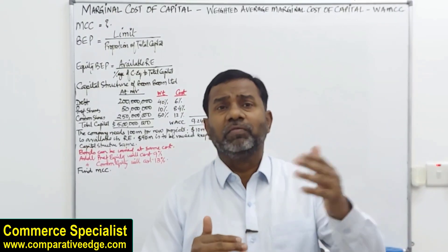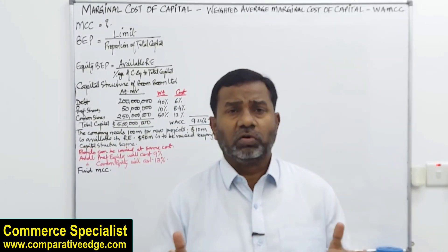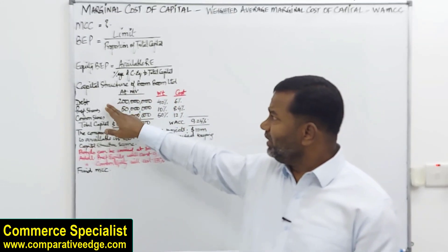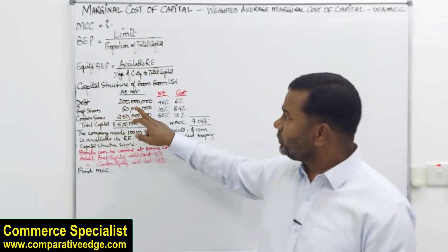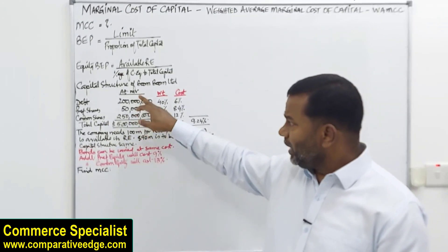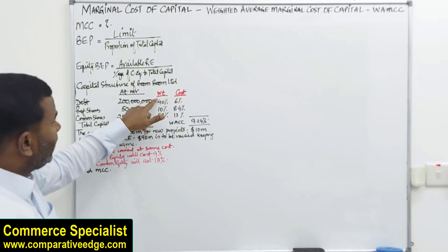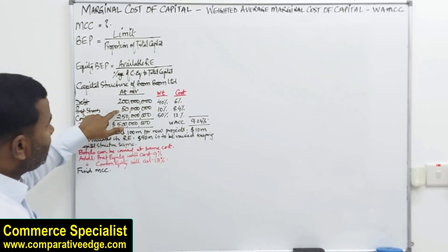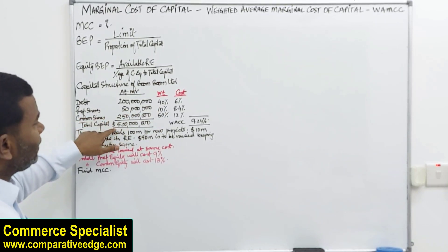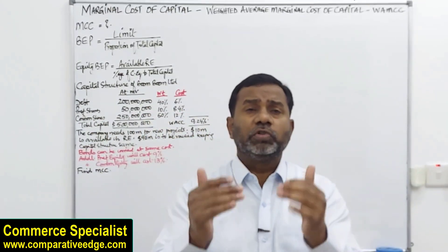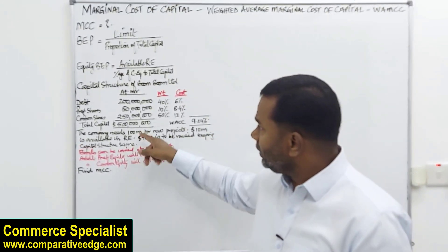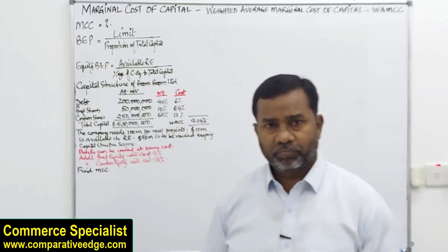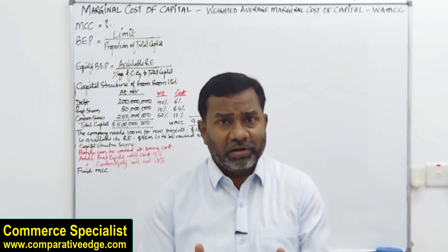Now let's jump into the practical application of marginal cost of capital. The capital structure of Boom Boom Limited is: debt 200 million, preference shares 50 million, and common equity 250 million — total 500 million. The weights are: debt 40%, preference shares 10%, and common equity 50%. These weights represent the composition of each source of finance in the total capital.